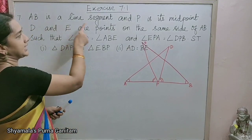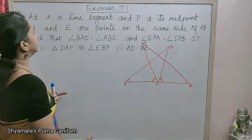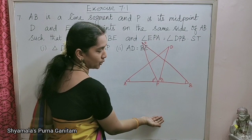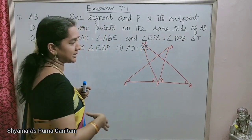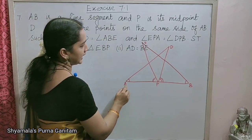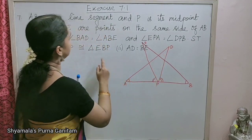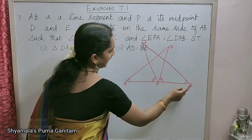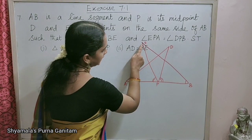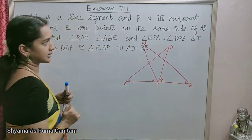Seventh sum: AB is a line segment and P is its midpoint. D and E are points on the same side of AB such that angle BAD is equal to angle ABE, and angle EPA is equal to angle DPB. Show that triangle DAP is congruent to triangle EBP.